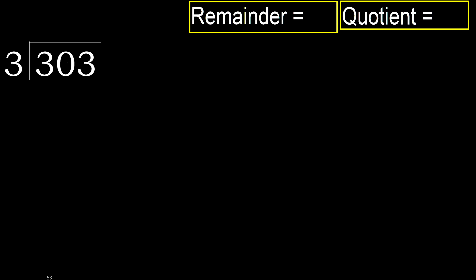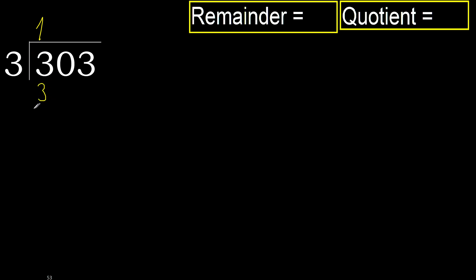303 divided by 3. 3 is not less, therefore work with 3. 3 multiplied by which number is nearest to 3 but not greater? 3 multiplied by 2 is 6 — 6 is greater. Multiplied by 1 is 3 — it is not greater. 3 minus 3 is 0.